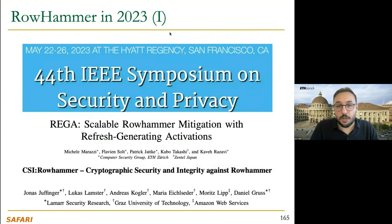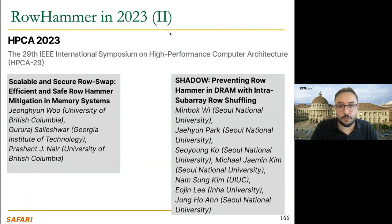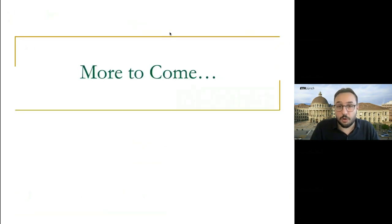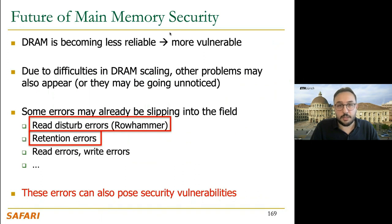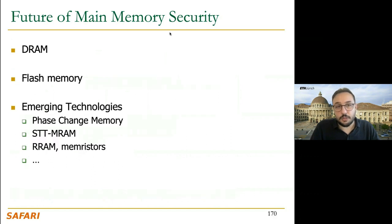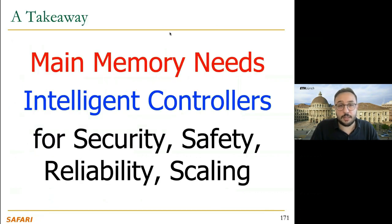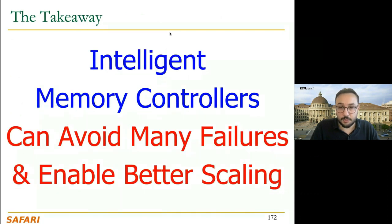IEEE Security and Privacy already has two papers coming up on RowHammer in 2023, and HPCA also has two papers, so we expect more RowHammer papers to come. DRAM is becoming less reliable, and due to difficulties in DRAM scaling, other problems may also appear. We already see RowHammer and retention errors getting worse, and these errors can create security vulnerabilities — not only in DRAM but also in flash memory and emerging technologies. The solution for main memory is intelligent controllers for security, safety, reliability, and scaling.